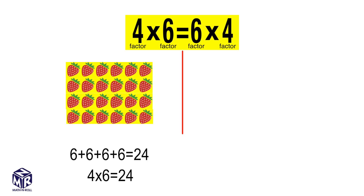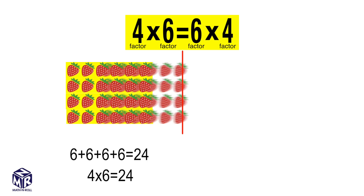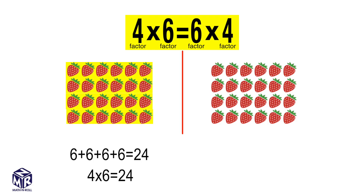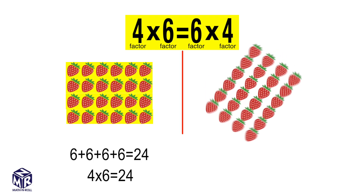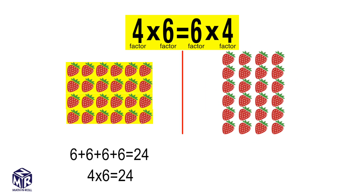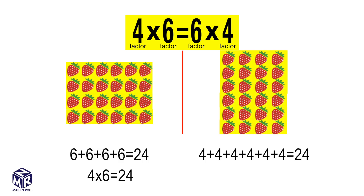Let's rotate the array vertically. This time we have 6 rows and 4 columns. 4 plus 4 plus 4 plus 4 plus 4 plus 4 equals 24, so 6 times 4 equals 24.